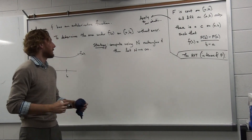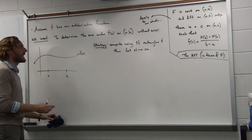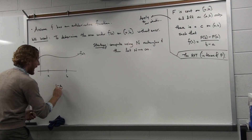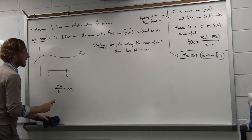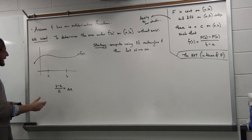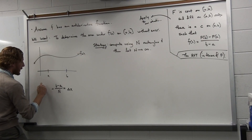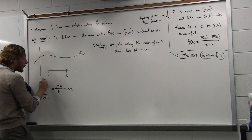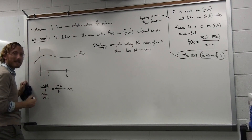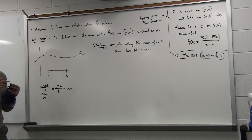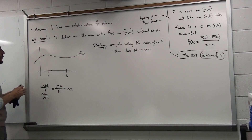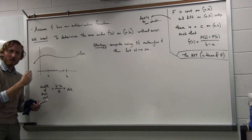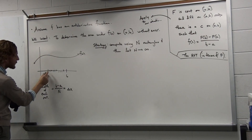Now let's build this up from scratch. We want to compute an area estimate using n rectangles. First, take the interval of width b minus a and break it into n pieces. Call that width delta x — the width of each rectangle — which equals b minus a over n. So each of these rectangles is delta x wide.